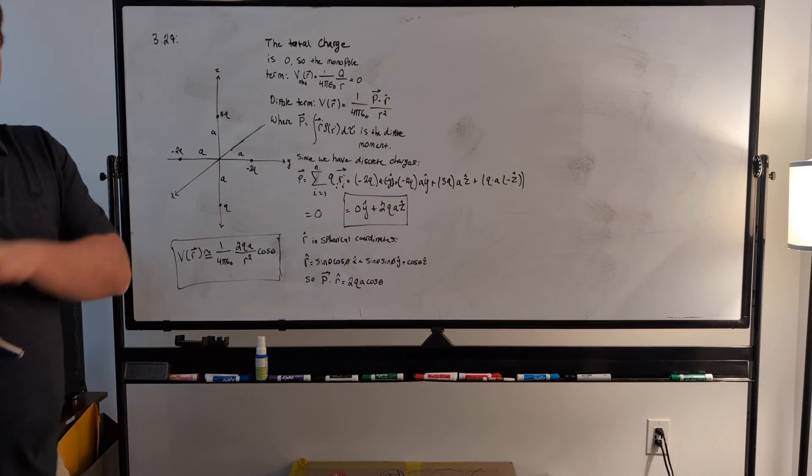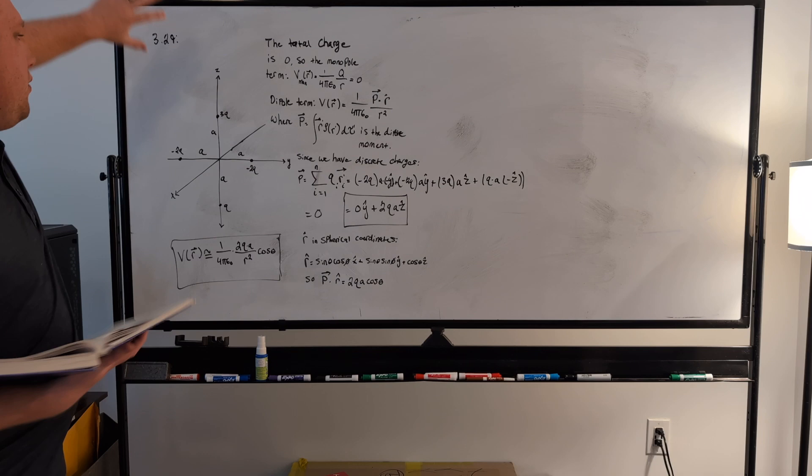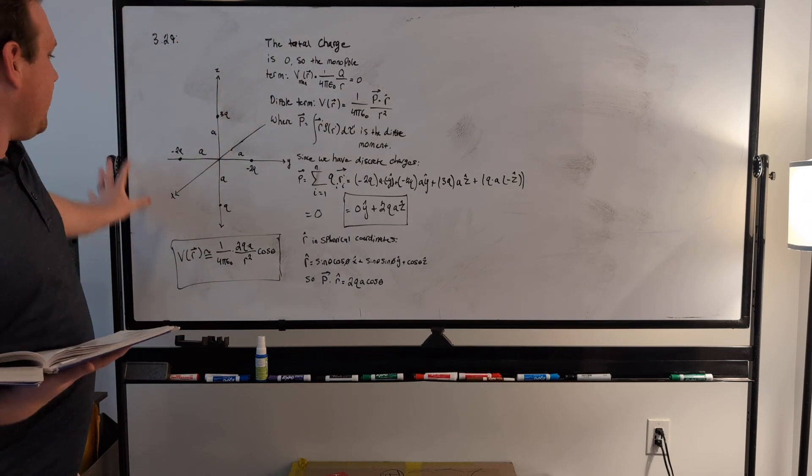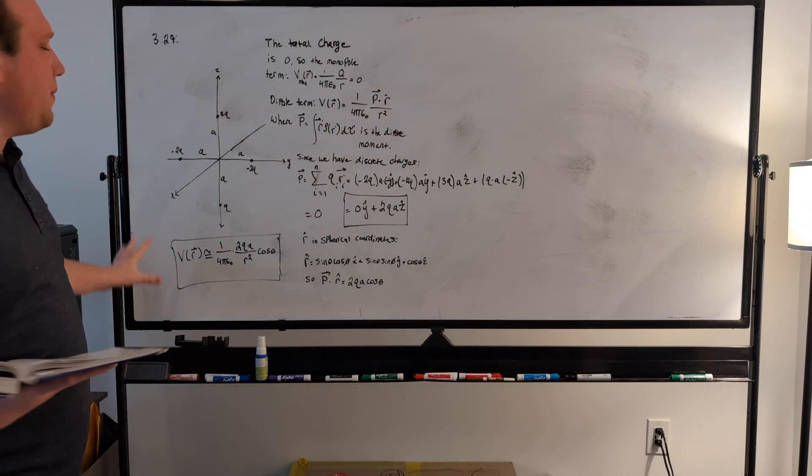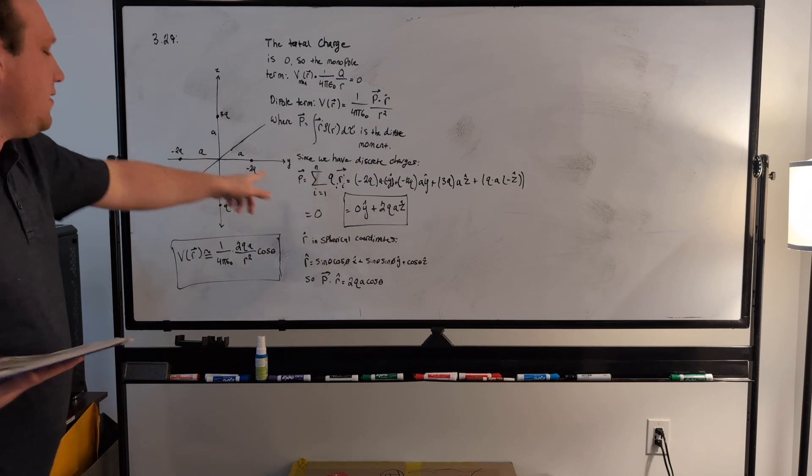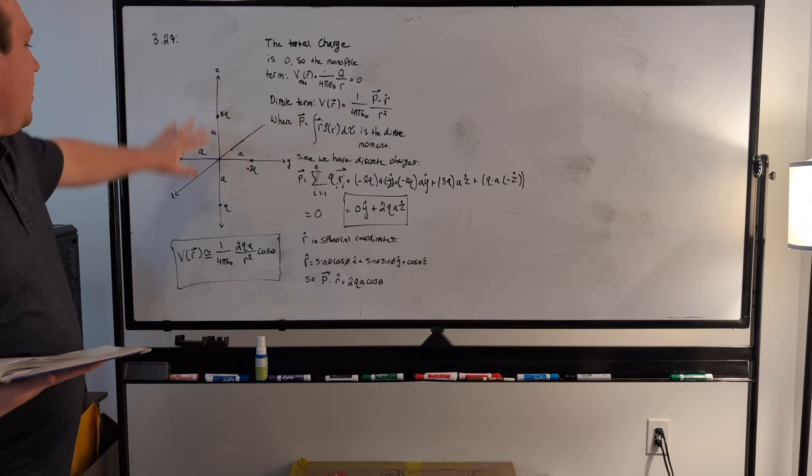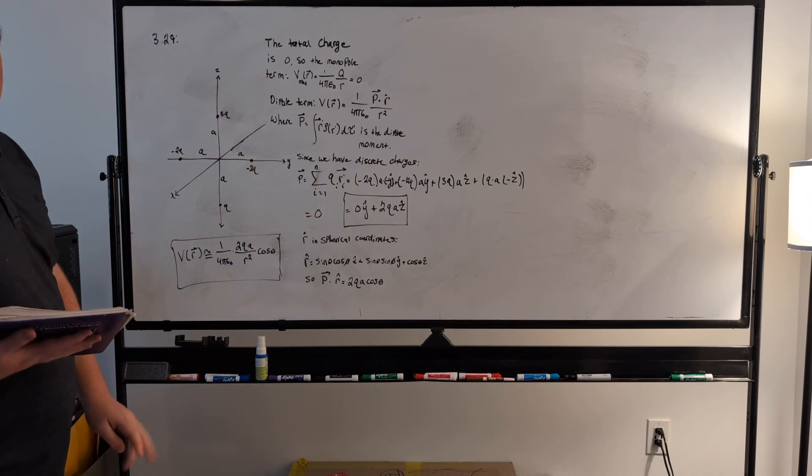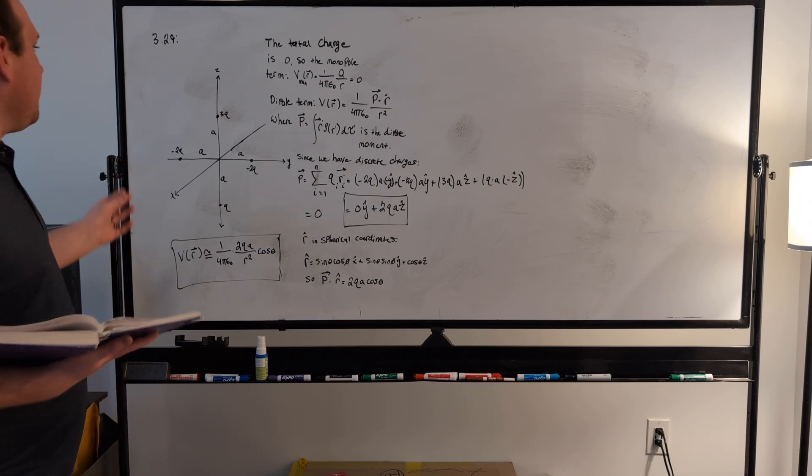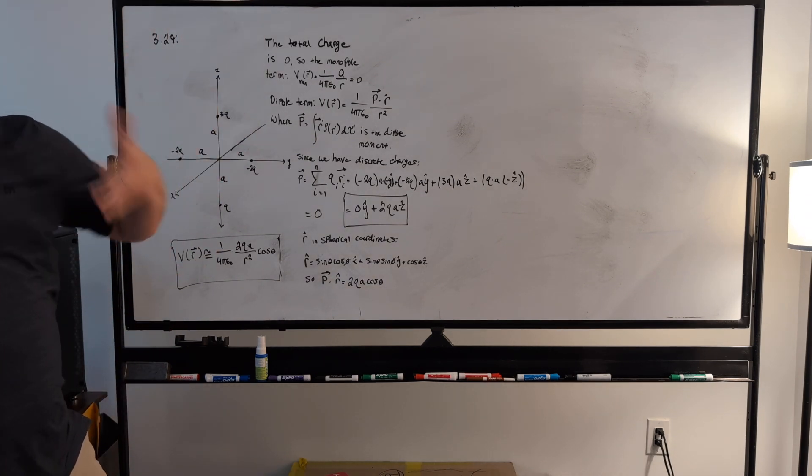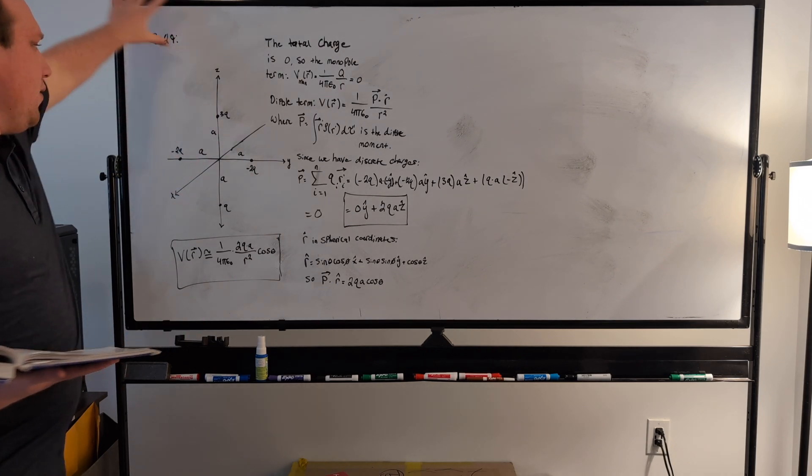Now, that doesn't mean that it's not producing an electric field and potential, because the charge is not symmetrically distributed. On the y-axis it's symmetrically distributed, but on the z-axis it's not quite symmetrically distributed, so there is going to be some electric field and potential produced that's not zero.